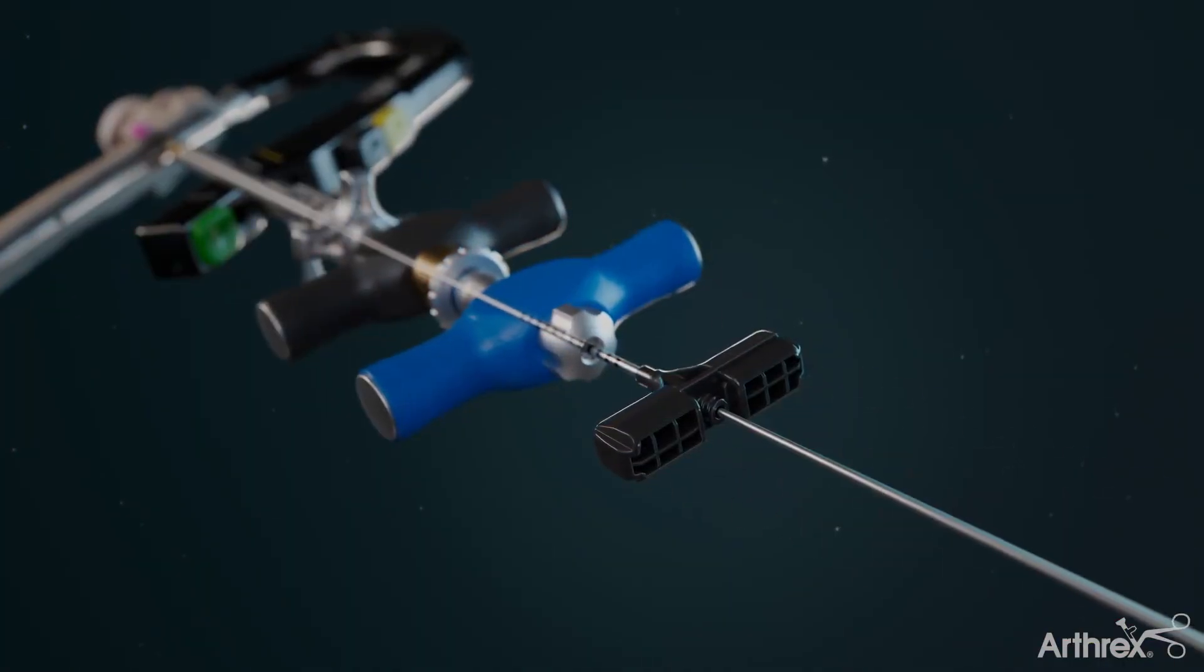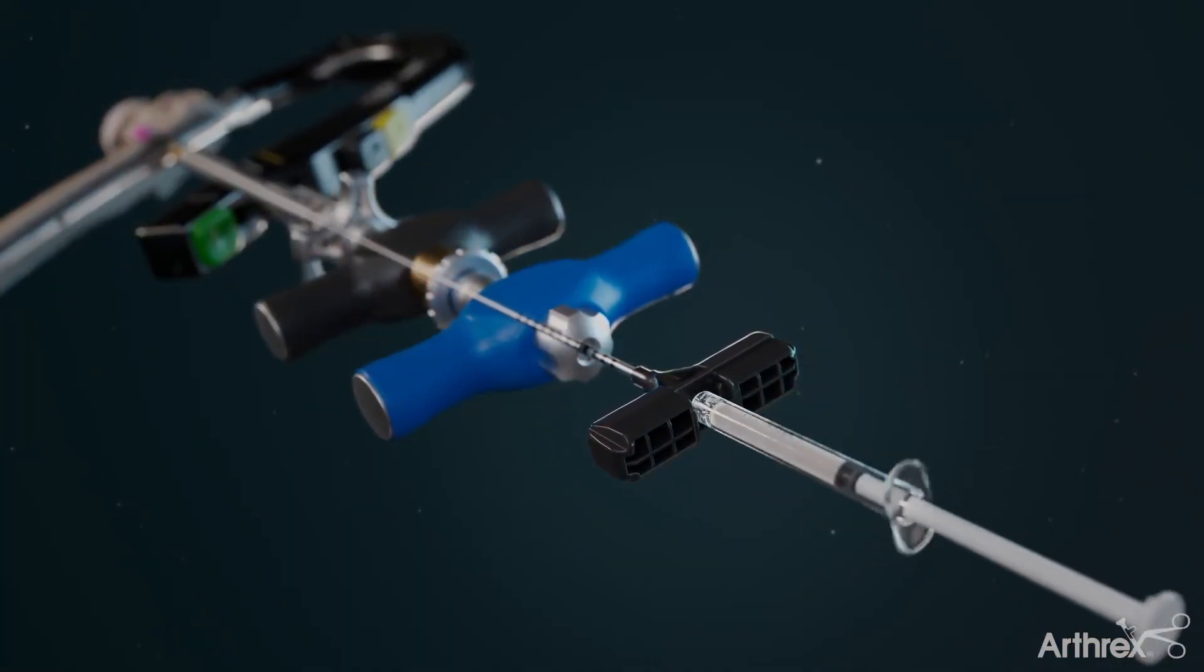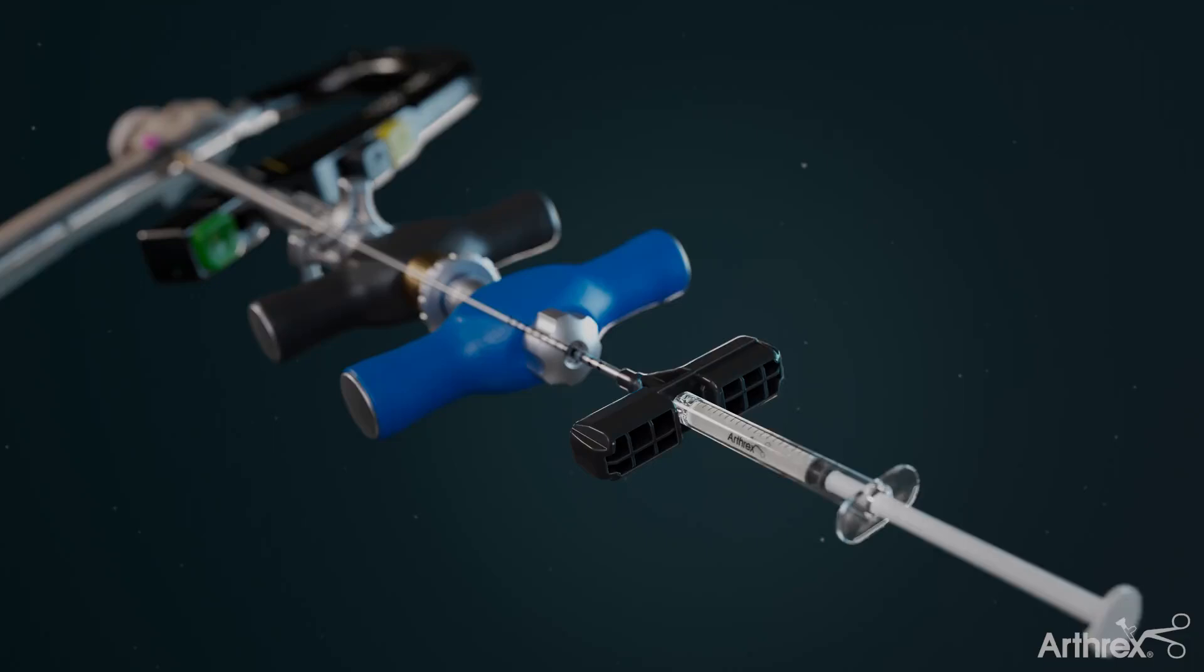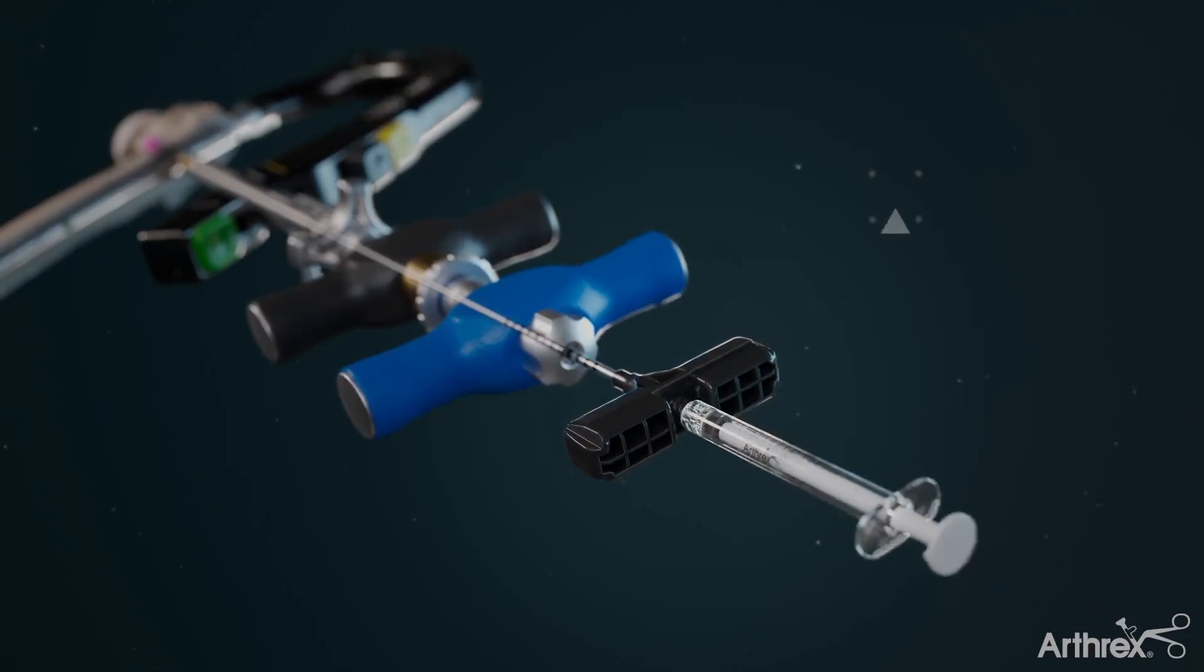Remove the inner trocar from the delivery cannula and attach the 1cc syringe with the bone graft material and inject. Repeat until all graft is delivered.